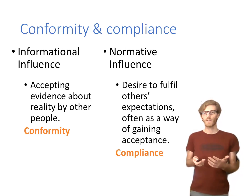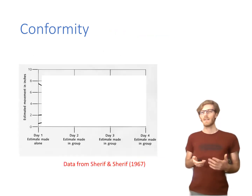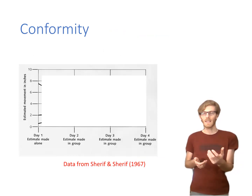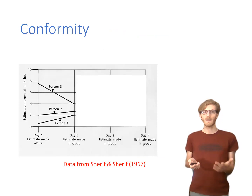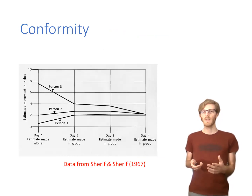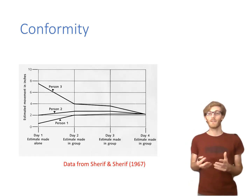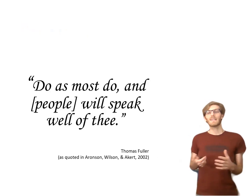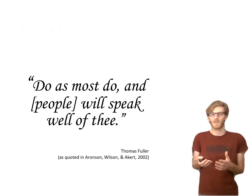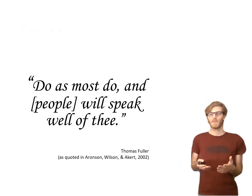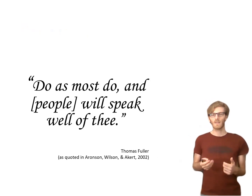Both can sometimes be good strategies. In a situation like Sherif's experiment, where the real answer is really hard to get at — remember they were measuring an optical illusion, so the objectively real answer would have been zero, but you do believe there is some movement — it makes a lot of sense to develop conformity; you want to learn from each other and arrive at a common answer. But conformity is problematic when it leads you to an obviously wrong answer. Participants interviewed afterwards said of course they knew which line was right, but as one put it: 'do as most do' — so it was a case of compliance.